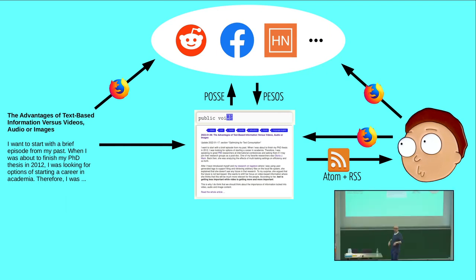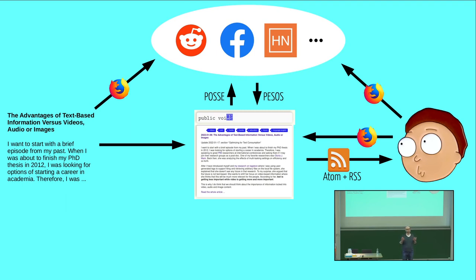I strongly recommend that everyone use Atom or RSS with a feed aggregator, so content from hundreds of different web pages comes to you. You don't have to visit each source to check for new content. In my personal life, I can't imagine being an information-driven person without a feed aggregator. The key advantage: no algorithm decides what you won't see — you build your own information diet.